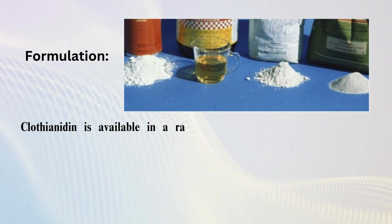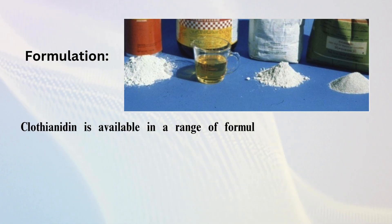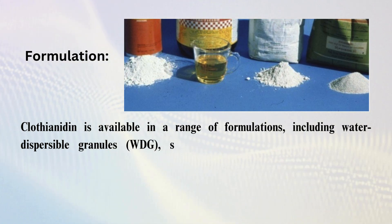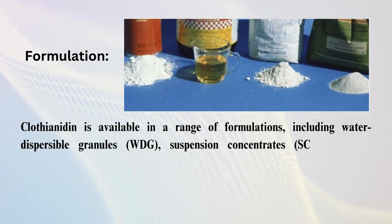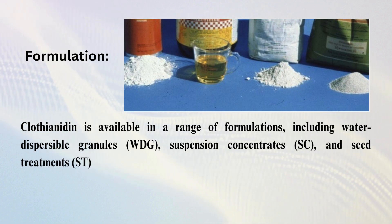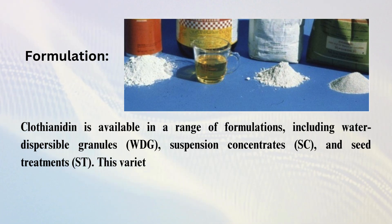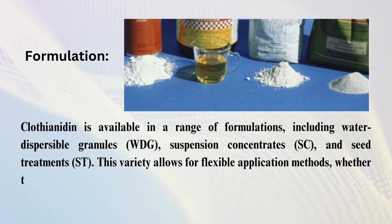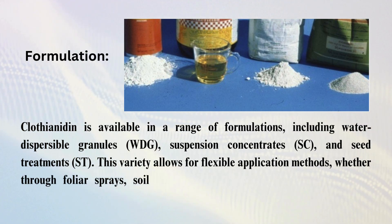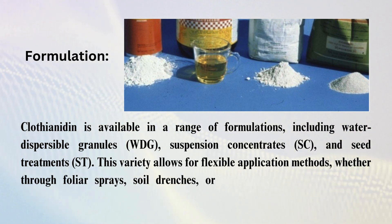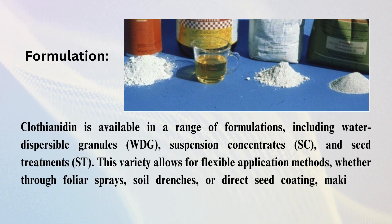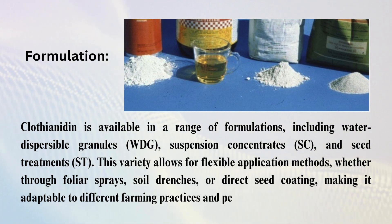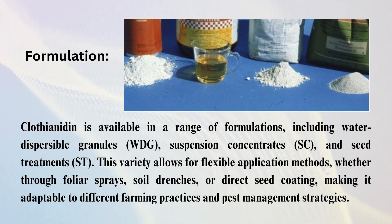Clothianidin is available in a range of formulations, including water dispersible granules, suspension concentrates, and seed treatments. This variety allows for flexible application methods, whether through foliar sprays, soil drenches, or direct seed coating, making it adaptable to different farming practices and pest management strategies.